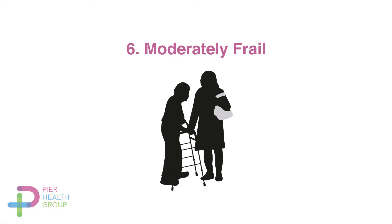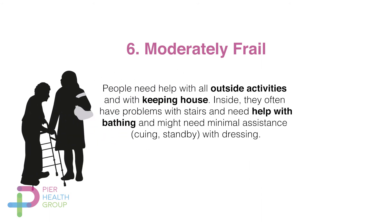Looking at number six on the frailty scale, it says moderate frail. Don't just look at the picture — read the narrative as well, as it's important to look at both before deciding the level of frailty. Number six describes people who need help with all outside activities, keeping house, stairs, and bathing. You may not have many residents at this level — in fact, you might not have any.